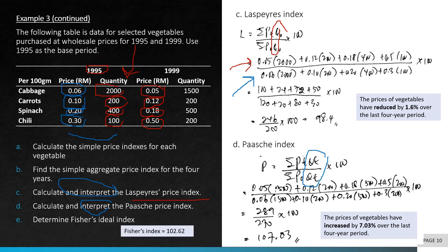Finally, for part E, Fisher's ideal index is the geometric mean of the Laspeyres and Paasche indexes. Take the Laspeyres index, multiply it by the Paasche index, then find the square root. This gives Fisher's index of 102.62, meaning the prices of vegetables have increased by 2.62% over the last four-year period.